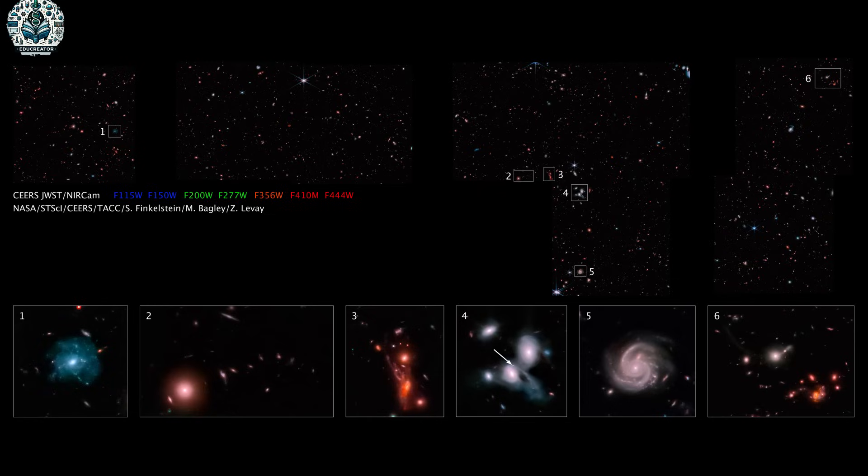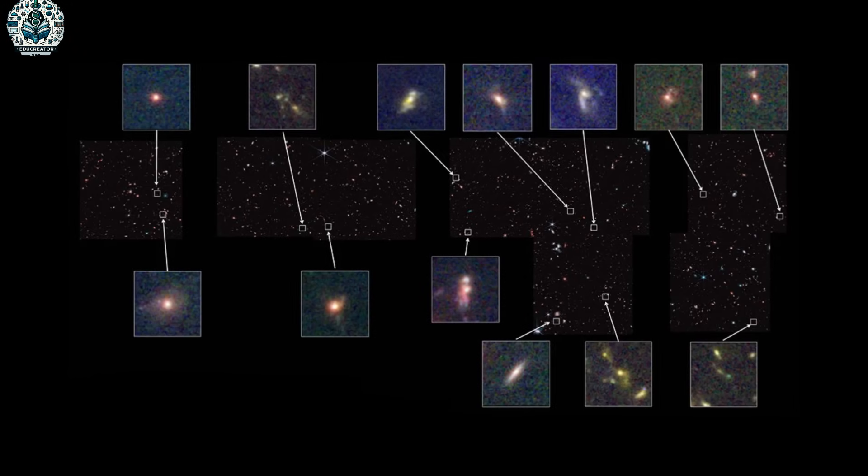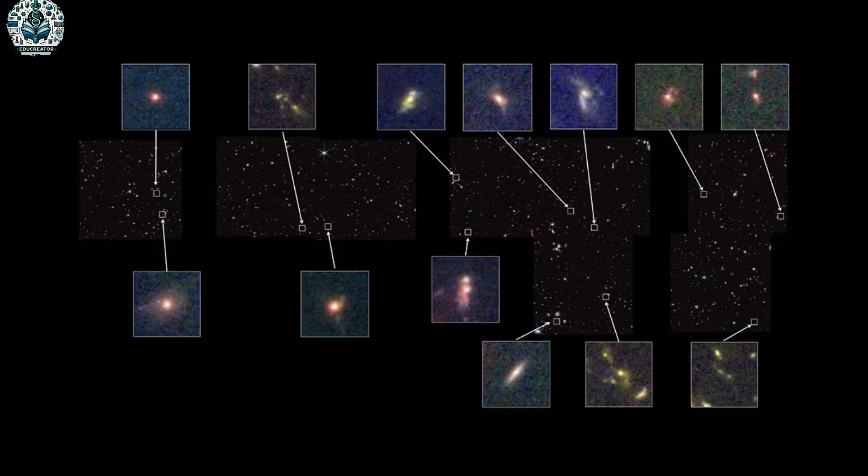For starters, JWST has spotted some really old galaxies - like these newborn ones that popped up just a few hundred million years after the Big Bang. And they are surprisingly big, way bigger than what we thought galaxies from that time would look like. It's making us rethink how fast stars formed back in the day.